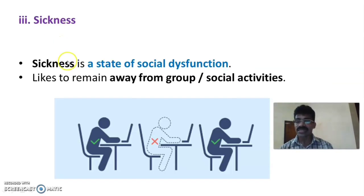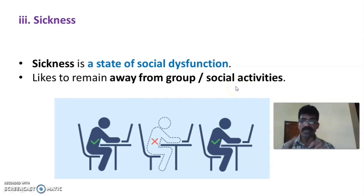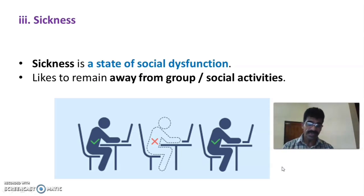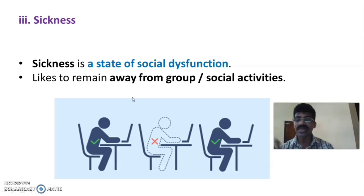The third concept is sickness. Sickness is a state of social dysfunction. Because of the disease, a person may feel ill and discontinue group or social activities — that is called social dysfunction. A person gets away from or remains away from group or social activities. For example, a student who is absent from class is marked as sick leave, because due to disease he is unable to attend class with his group of students — that is a social activity. Thus, sickness is a state of social dysfunction in which a person remains away from group or social activities because of the disease or illness.